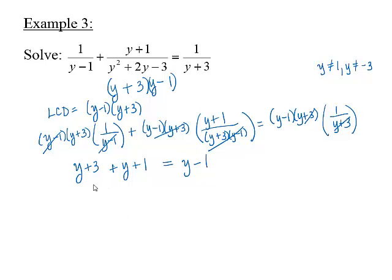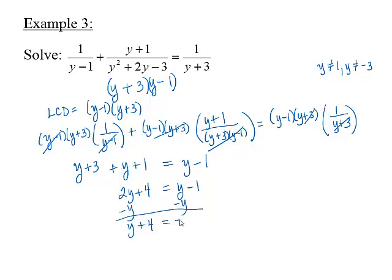Combining like terms gives us 2y + 4 equals y minus 1. Subtract y from each side to get y + 4 equals negative 1, then subtract 4 from each side to get y equals negative 5. This is not an extraneous solution, so the solution set is the set containing negative 5.